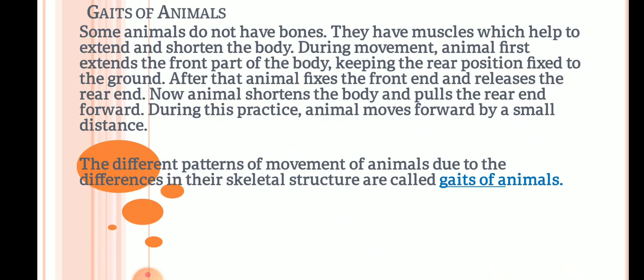When these animals move, they extend the front part of the body while the back part remains fixed to the ground. After that, the animal fixes the front end and releases the rear end. The body is then shortened, pulling the rear end forward. This way, animals move forward by a small distance with each cycle.